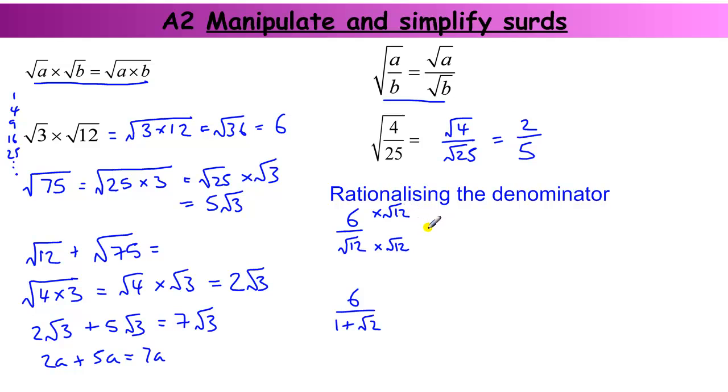Top and bottom. If we times the top and bottom by the same thing, we're just finding an equivalent fraction. It's the same value, but just different. So this will give me square root of twelve times square root of twelve is actually just twelve. Or square root of forty-four, which is twelve. And I've got six times the square root of twelve on top.